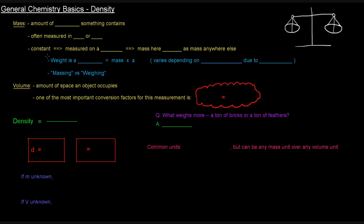What is mass? We mentioned it earlier in the first video — mass and volume actually — and we talked about how we'd figure out what they mean based on how they were measured. Mass is basically the amount of matter something contains. It's a kind of funny definition — we said that matter is anything that has mass and volume, and then we define mass as the amount of matter something contains. Mass is often measured in grams or kilograms, which kind of helps us understand what's going on.